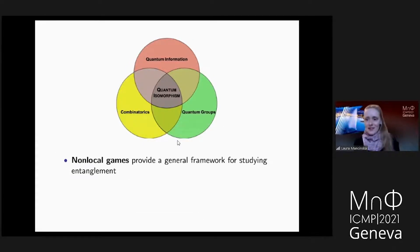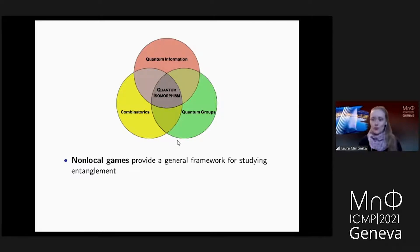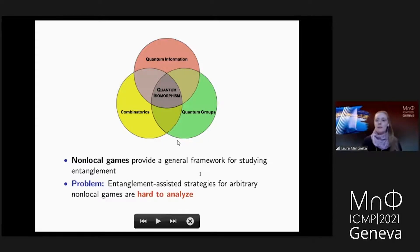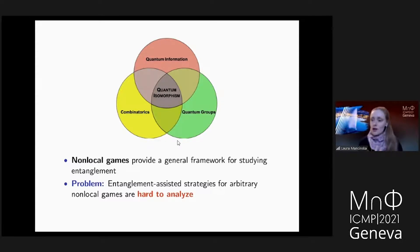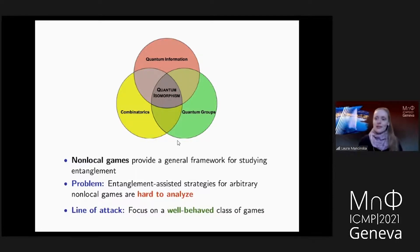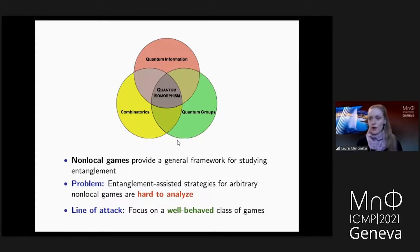Why are quantum isomorphisms interesting? They are a special class of non-local games, and in quantum information we very successfully use this framework to study entanglement and its uses when it comes to distributed parties. However, if you look at a very general non-local game, its entanglement-assisted strategies are hard to analyze because they seem to lack additional nice mathematical structure we can take advantage of. One way around this is to focus on some well-behaved class of non-local games that do possess this nice additional mathematical structure. I really view quantum isomorphism as one such class.